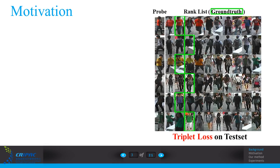The triplet loss is a common loss used in person re-identification. Here are some of their results on testing set. We can find in the testing set some false positives are more similar to the probe image.